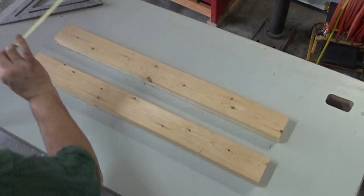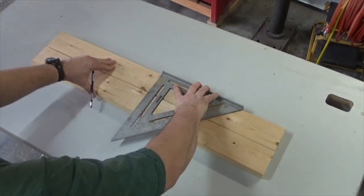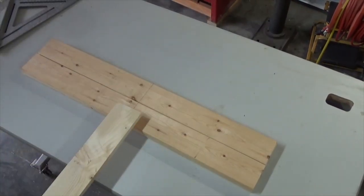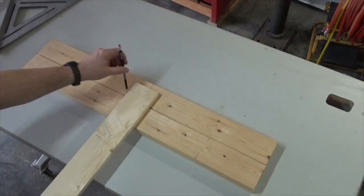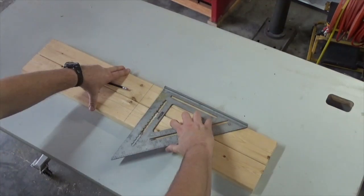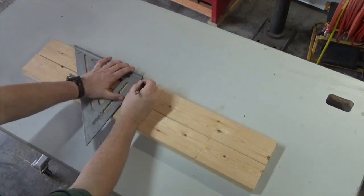Begin by making the base by marking the center of both 2x4s. Then center a 1x4 over this line and mark on each side. Finish the marks off straight using a speed square.